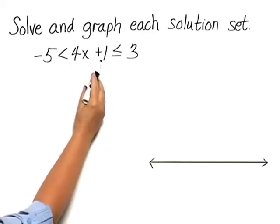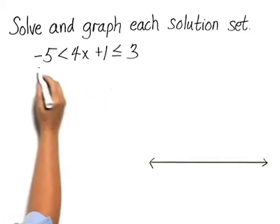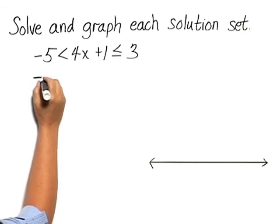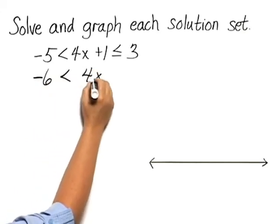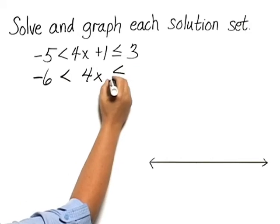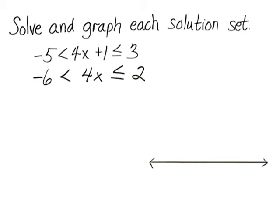For example, I can subtract 1 from all three parts. That gives me negative 6 is less than 4x, which is less than or equal to 2.